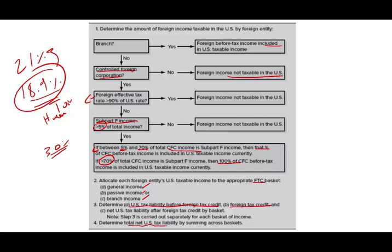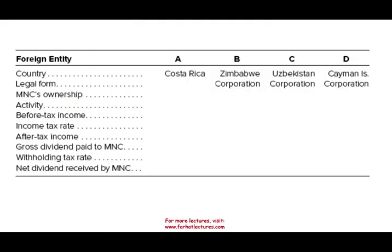Then we have to determine the US tax liability. We'll see those steps when we work the example. The best way to illustrate this concept — I suggest you take notes from this slide, or you can go to my website and subscribe to download it. To illustrate this concept, we're going to assume a US multinational that has operations in Costa Rica, Zimbabwe, Uzbekistan, and the Cayman Islands — four different places. I'm going to show you the data for all of them and we'll go through those steps to determine how much of the income from these subsidiaries or branches is included or not included.